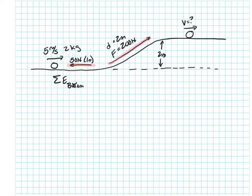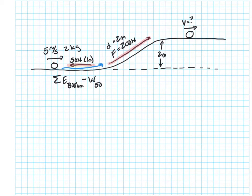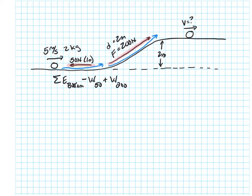The 50 Newton force is going to go the opposite direction of the motion — the ball is going in this direction, and this force goes the opposite direction — so it's going to remove energy from the starting point. So I'm going to write down minus work, and I'll just call it W-50 to label it. As the ball goes up the incline with the 200 Newton force for 2 meters going the same direction the ball is, that's going to add energy, so we say plus W-200. I don't have any other outside forces, so that will equal the total energy at the top.